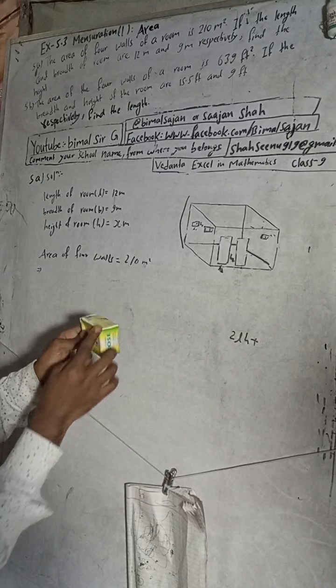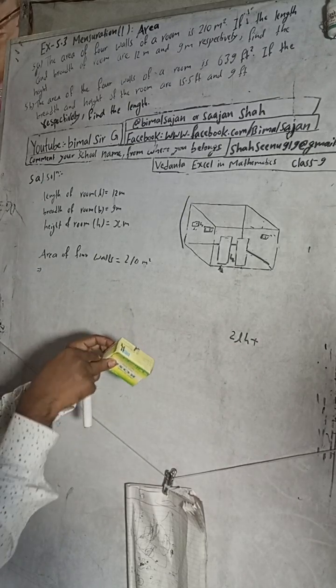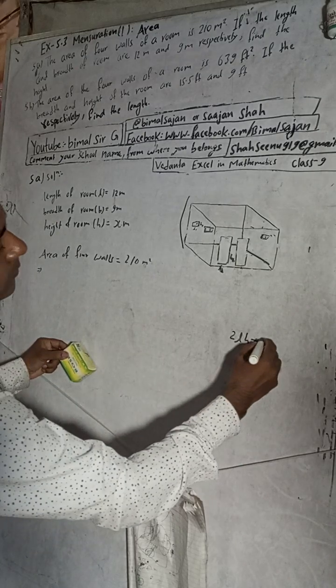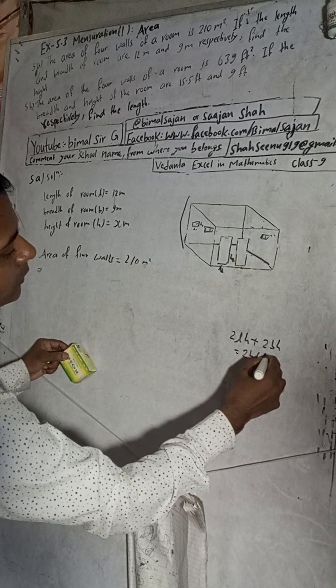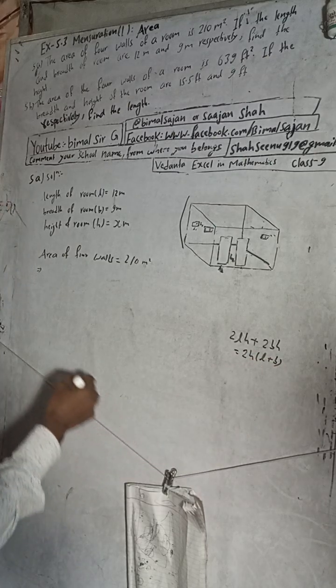Now this is breadth and this is height, so BH, and this is also BH, so 2BH. When it comes on 2H, it will be L plus B. Therefore we can write 2H into L plus B.